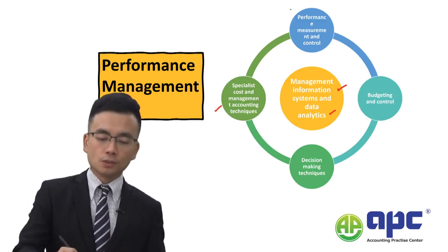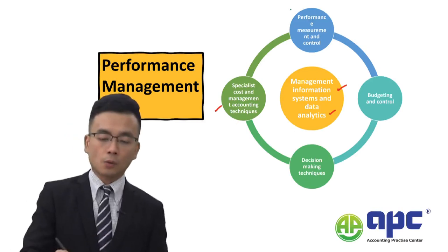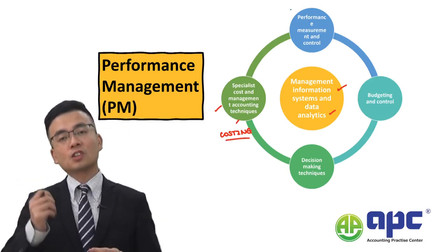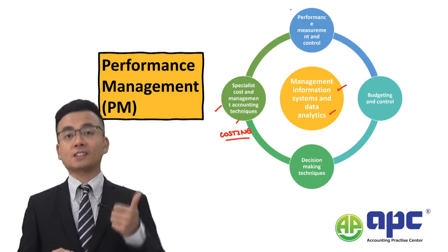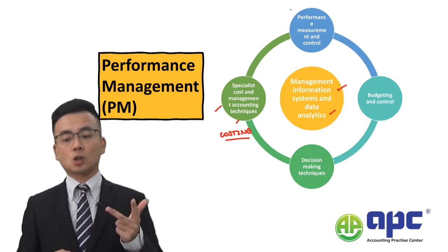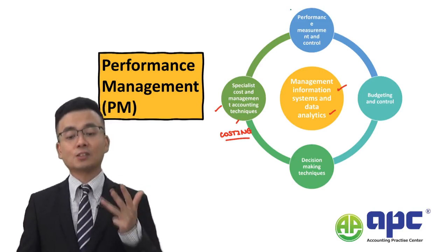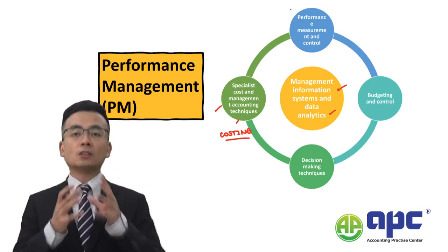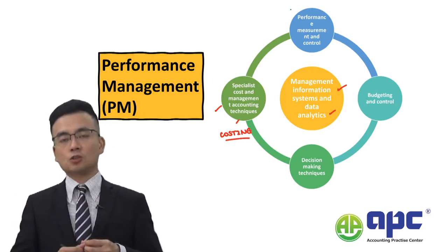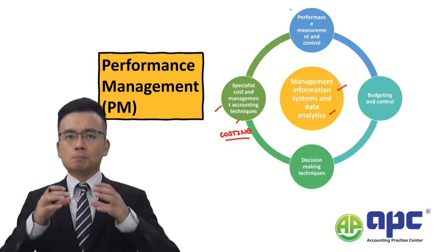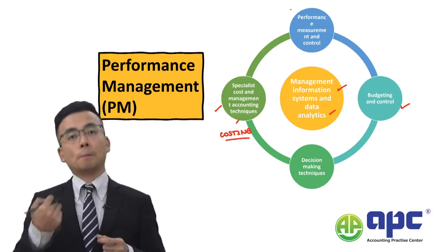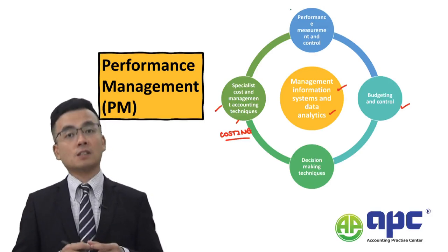Moving on to specialist cost and management accounting techniques, we focus on more advanced costing techniques — for example, activity-based costing (ABC), lifecycle costing, target costing, and throughput accounting. We need to determine costs per product or per service, for example using the composite cost unit concept. By doing that, we can set up budgeted costs and better control them using variance analysis later on.